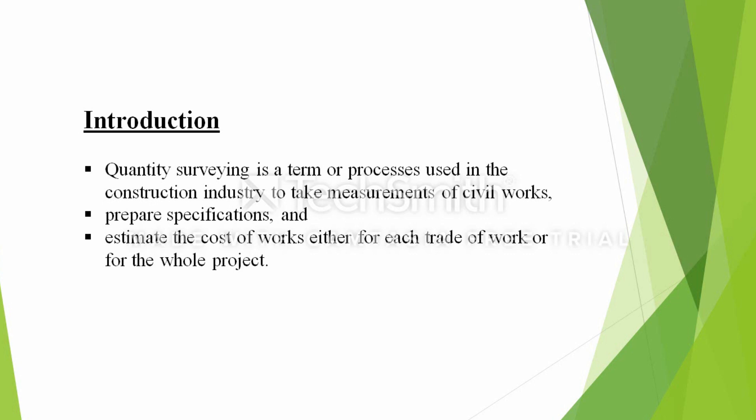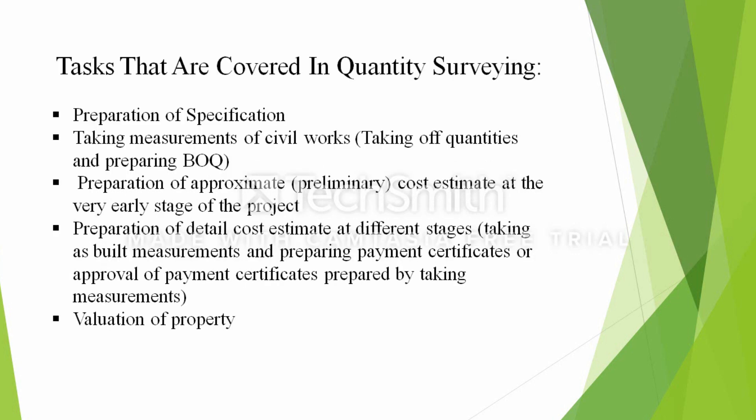This is the source and cost estimate. This is the trade. If you have a trade, the cost estimate will be the cost estimate and we will have a quantity survey. If you have a task, you will have a specification and a measurement of civil work. Civil work is located. If you have a task, you will have a take-off quantity and a bill of quantity prepared, followed by a measurement.